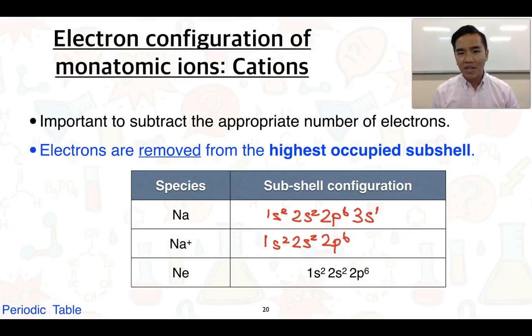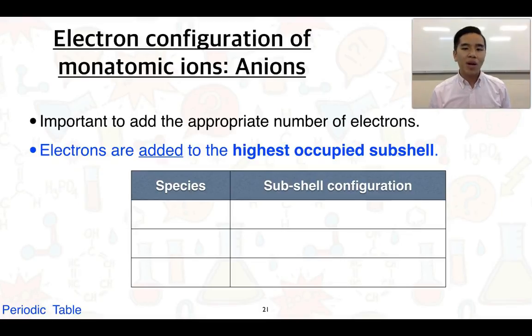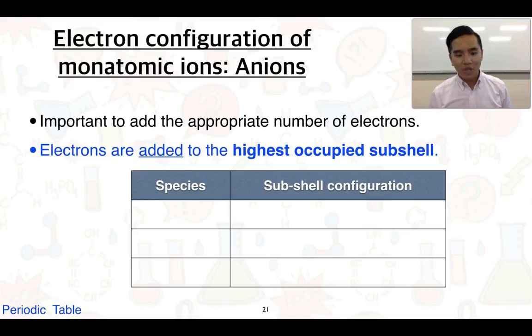If we look at anions, this is kind of the opposite. Instead of subtracting, we have to add the appropriate number of electrons, and we add electrons to the highest occupied subshell.